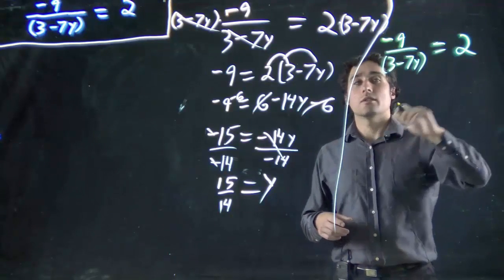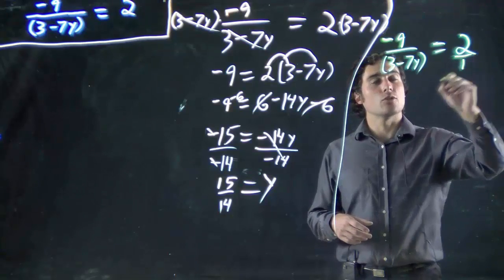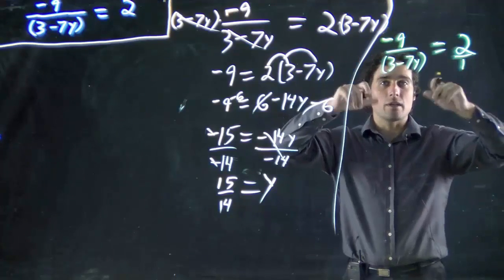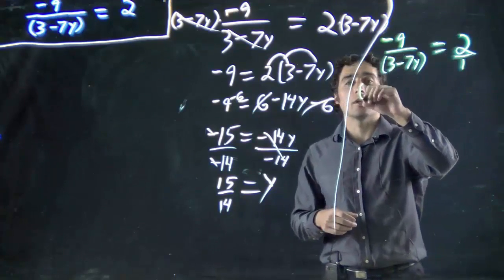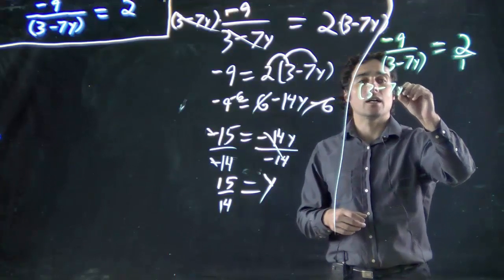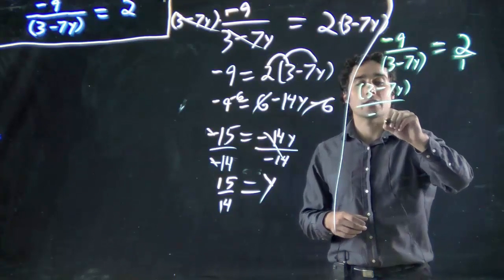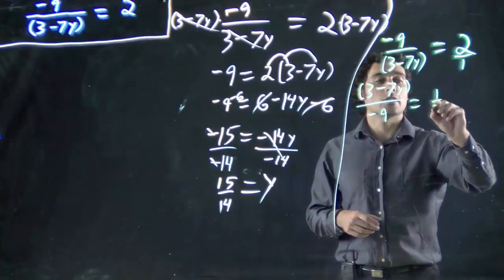So we didn't think, remember, that this is the same as 2 over 1. And so when I flip it, I flip both sides. And I'm left with 3 minus 7y all over minus 9 equals 1 half.